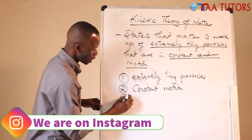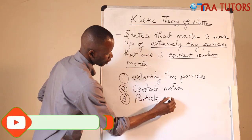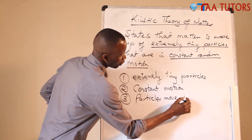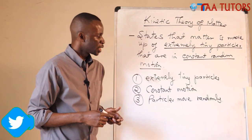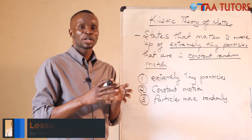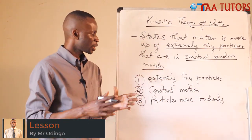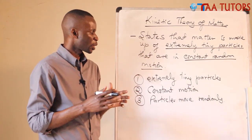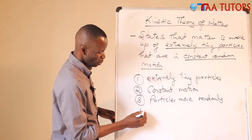Number three is random. Particles move randomly, meaning they are not moving in a particular order. Some are moving in different directions, others in other directions. It's a mess — everything is moving in a way that you cannot predict where any one particle is going to be at any particular point.